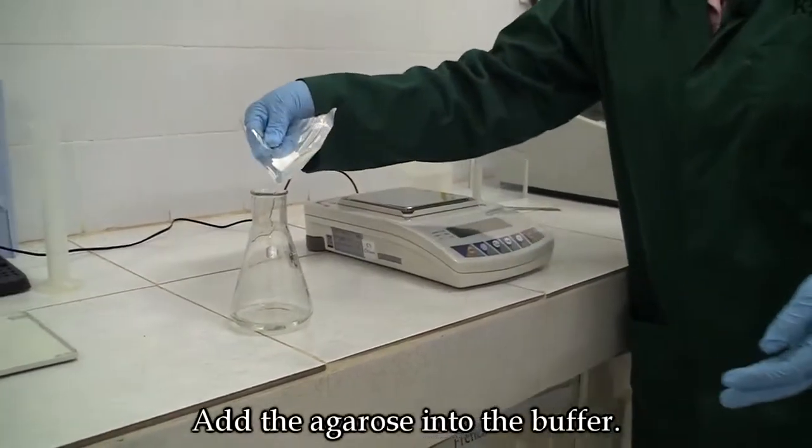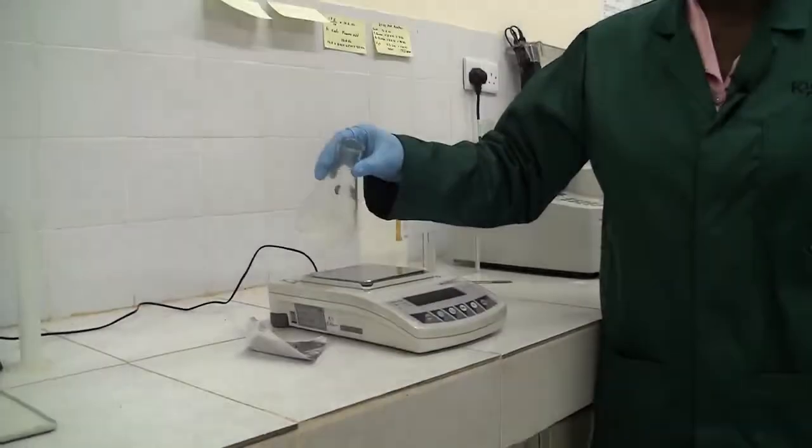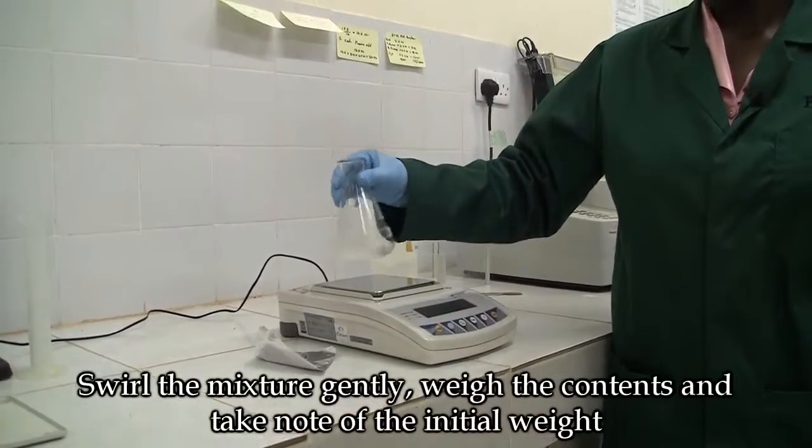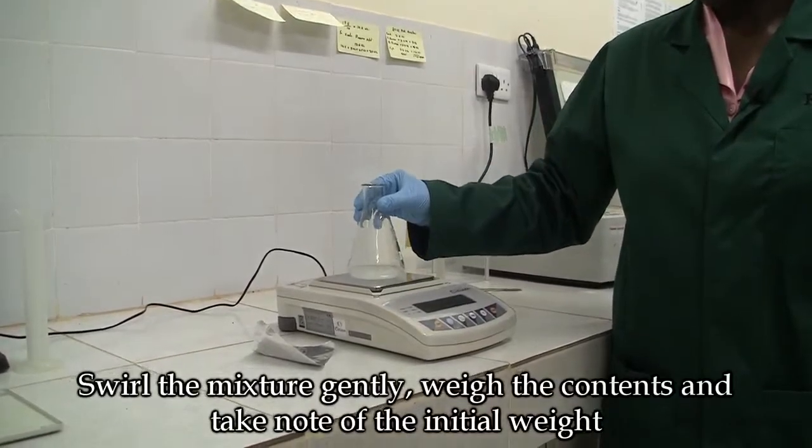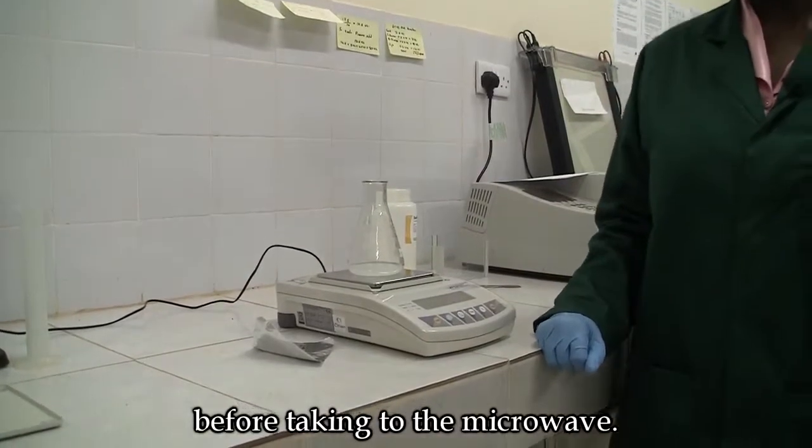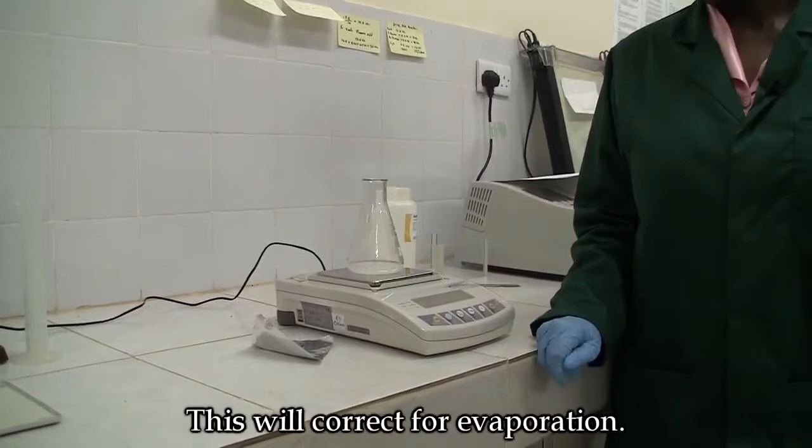Add the agarose into the buffer. Swirl the mixture gently, weigh the contents, and take note of the initial weight before taking the contents to the microwave. This will correct for evaporation.